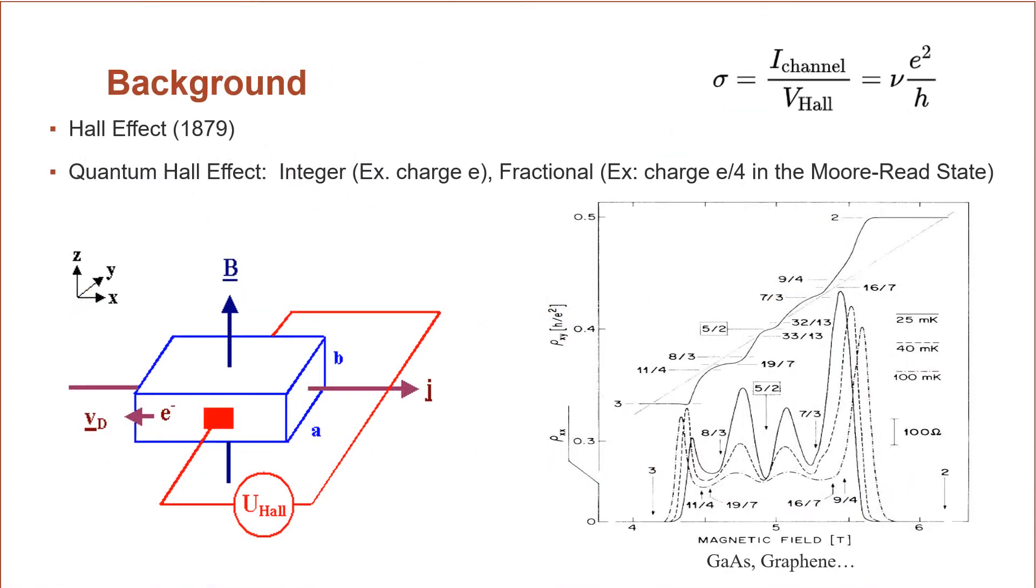Before delving into the theoretical and experimental implementations of such a system, we must first go all the way back to 1879 and the Hall effect discovered by Edwin Hall. So the Hall effect is when you have some current going through some conducting material and a magnetic field perpendicular to that current, then it was discovered you will have a voltage difference across that material that is perpendicular to both the current and the magnetic field. This is usually measured by the Hall conductance across that material.